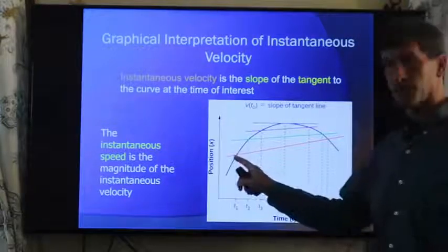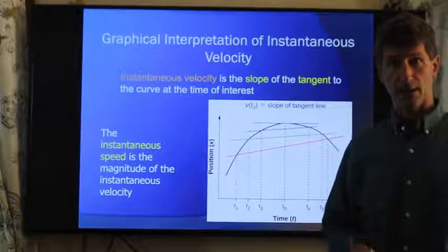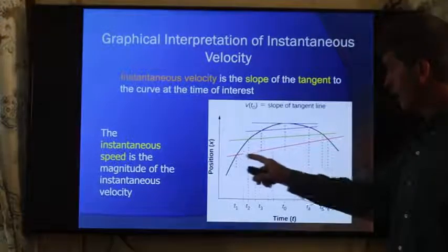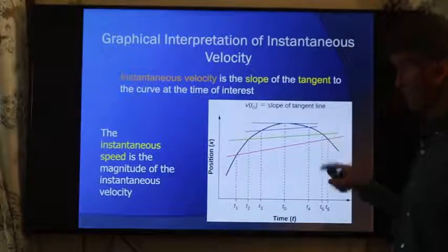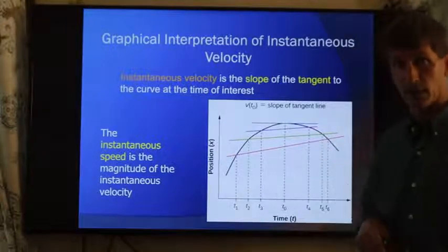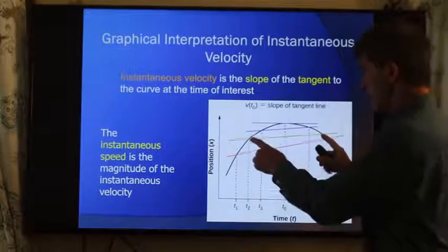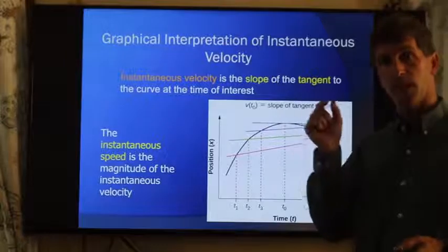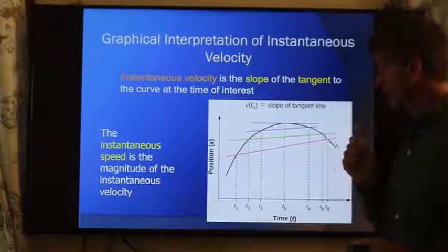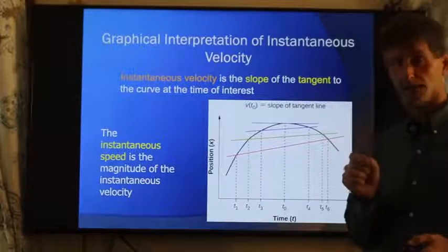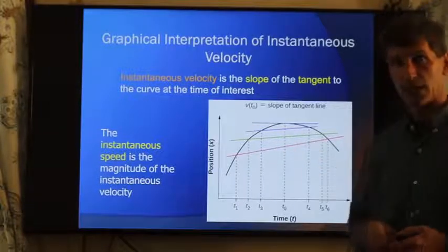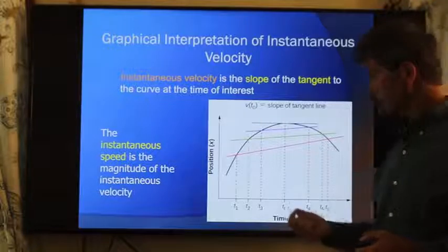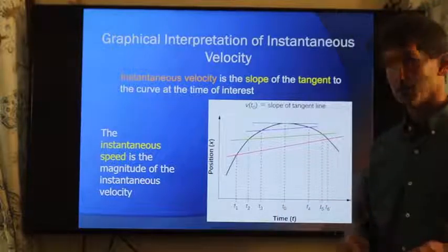So again, we can imagine going from this position to this position and calculating the average velocity. The average velocity would be how much our position has changed divided by how far we go. If we keep making those measurements between the two points smaller and smaller and smaller, we're getting a more closely related average velocity to what the actual velocity is at some point between them. Eventually, if we make the spread so small it's essentially zero,